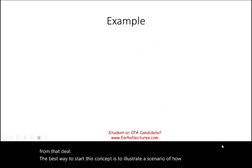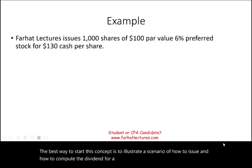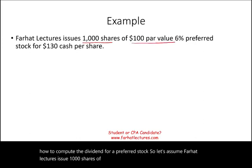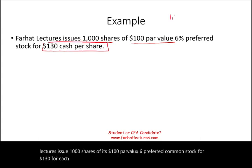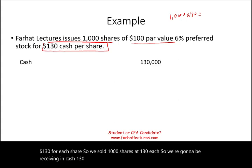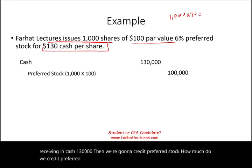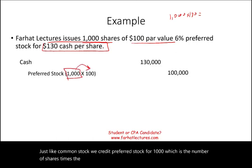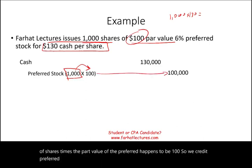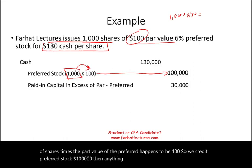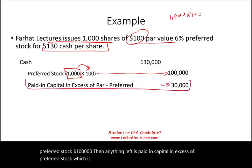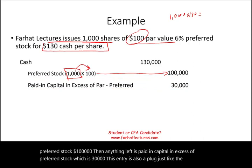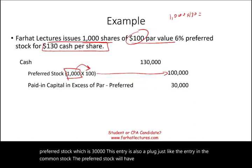The best way to illustrate this concept is to show how to issue and compute the dividend for preferred stock. Assume Farhat Lectures issues 1,000 shares of its $100 par value, 6% preferred stock for $130 per share. We sold 1,000 shares at $130 each, receiving $130,000 cash. We credit preferred stock $100,000 (1,000 shares times the $100 par value), and the remaining $30,000 goes to paid-in capital in excess of preferred stock.